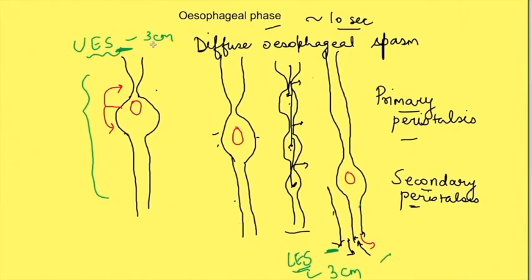The initial one-third portion of the esophagus is striated skeletal muscle, which means myopathies affecting skeletal muscles and disorders affecting neuromuscular junctions — such as myasthenia gravis — can also cause dysphagia.